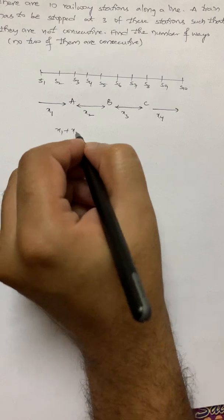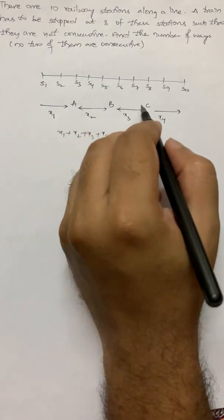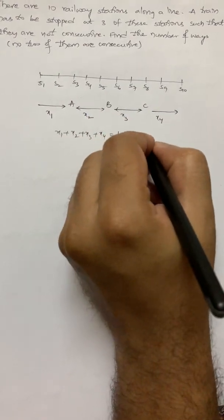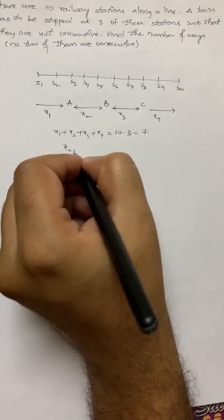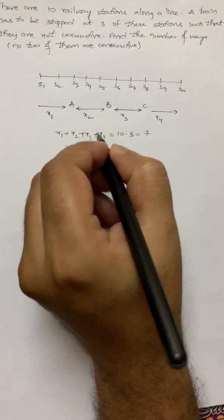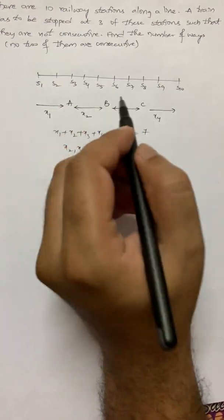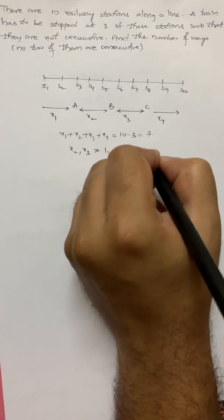x1 plus x2 plus x3 plus x4 is, already we are selecting three stations, we have 10. So 10 minus 3, 7 and we have a constraint here, x2, x3 should be minimum of 1 because they should not be consecutive. x1, x4 does not have any constraints. They can be 0s.